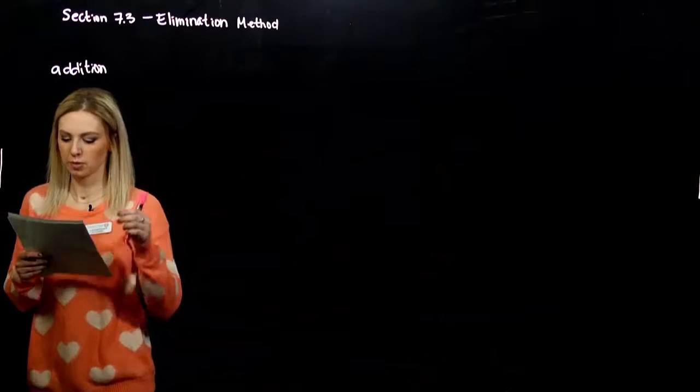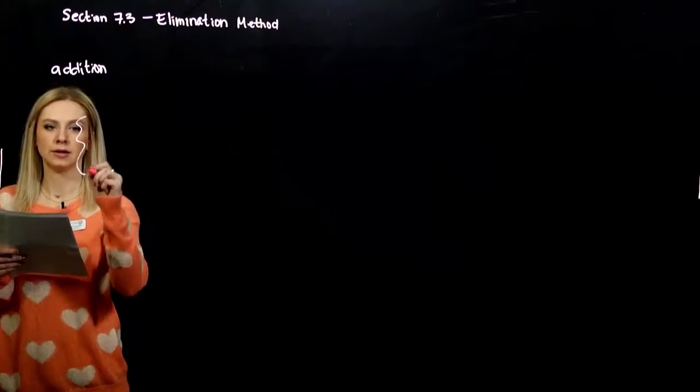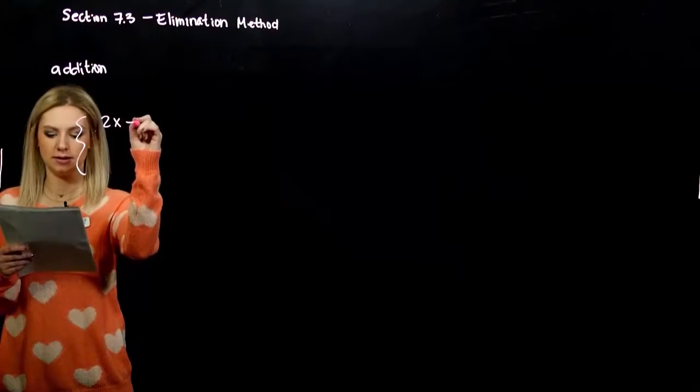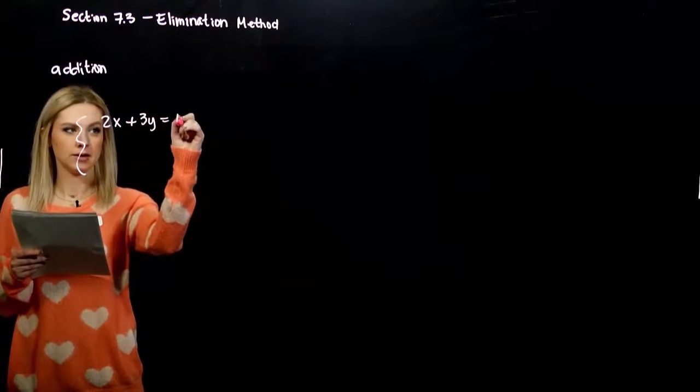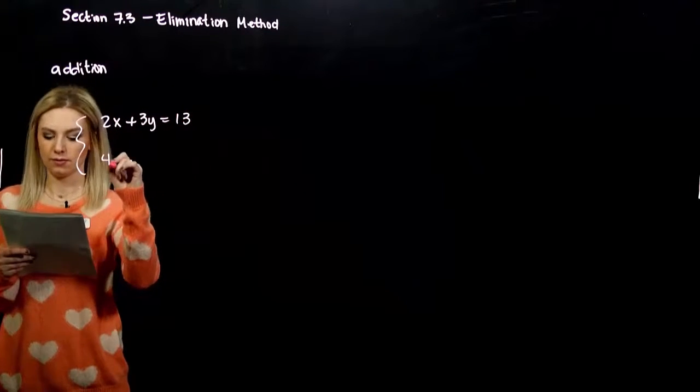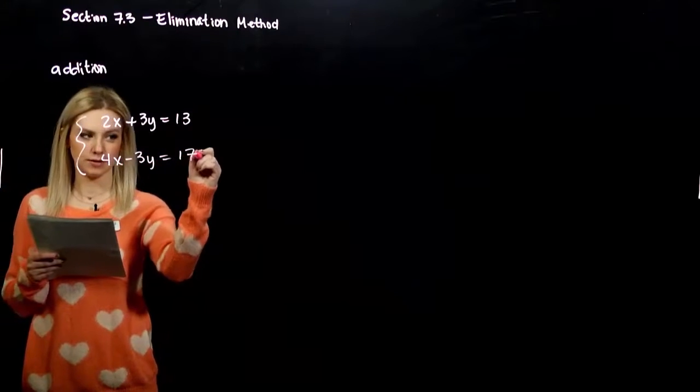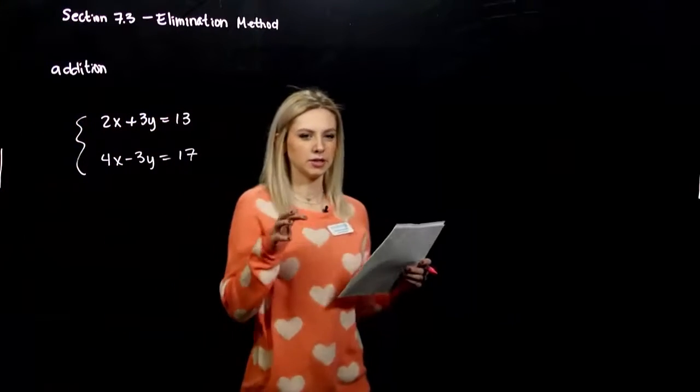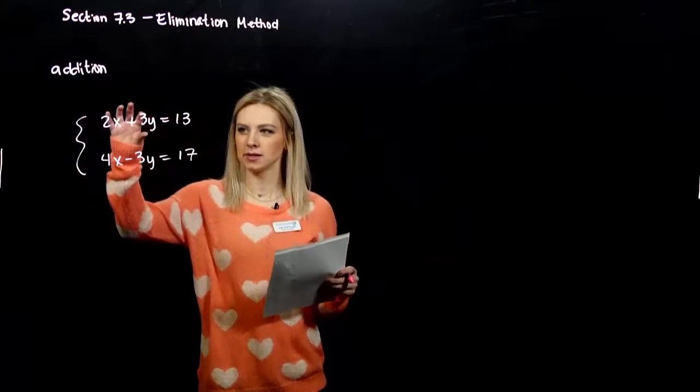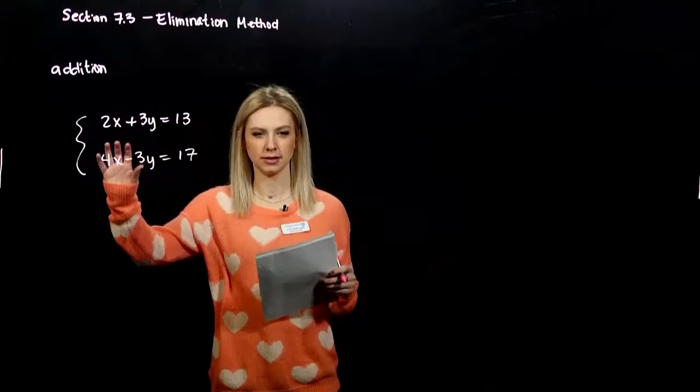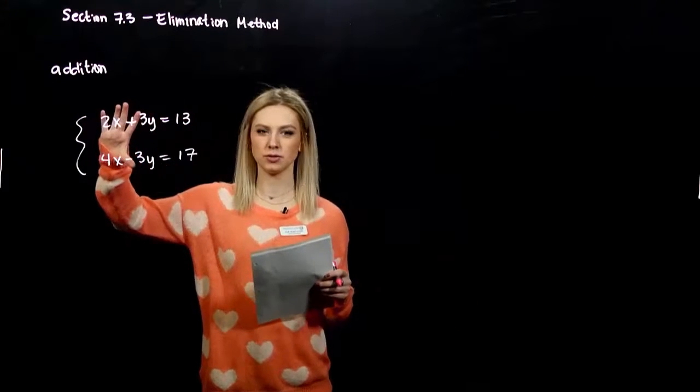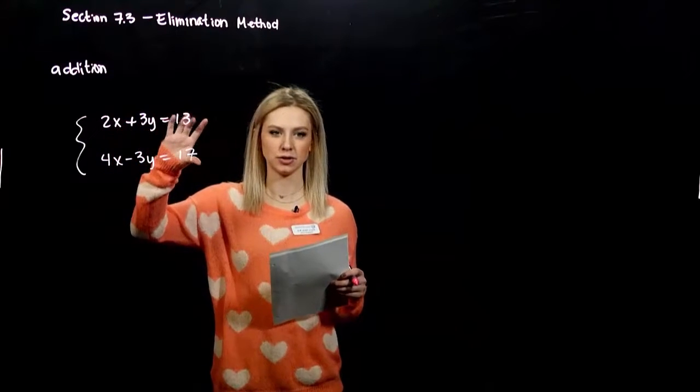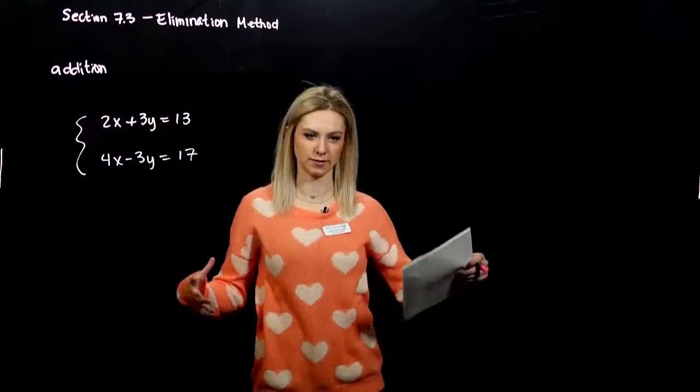So that first example we're going to look at. We want to solve the system 2x plus 3y equals 13, 4x minus 3y equals 17. Since the left side is equal to the right side, if I add the two left ones together and I add the two right ones together, those additions have to be equal to each other.